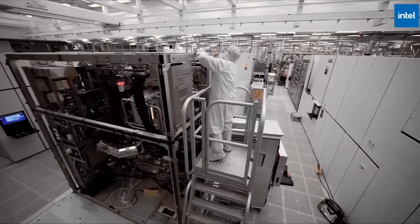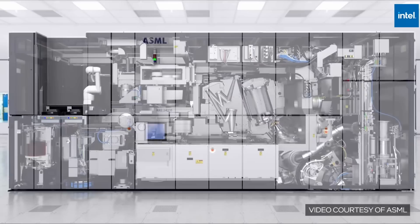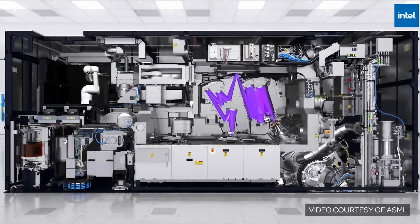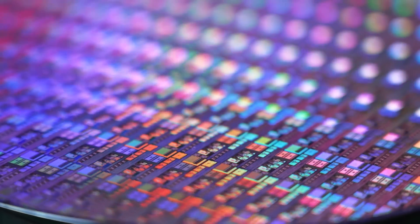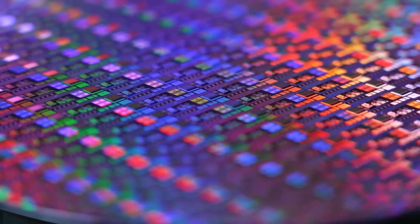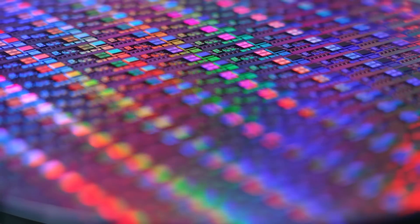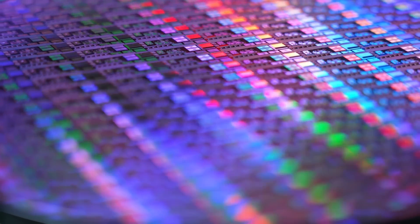ASML, or Advanced Semiconductor Materials Lithography, is the only firm in the world capable of making the highly complex machines needed to manufacture the most advanced microchips. ASML was founded as a joint venture between Philips and ASM International. They have a total monopoly and there's no sign of anyone catching up.